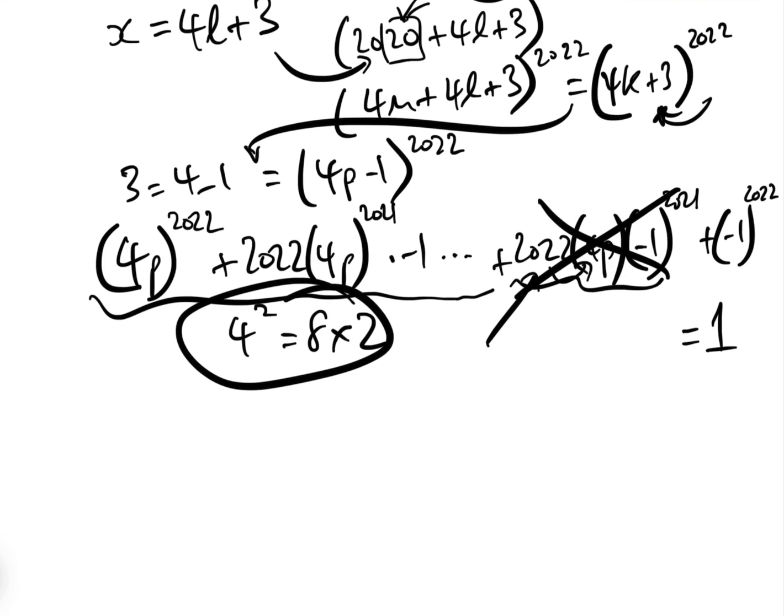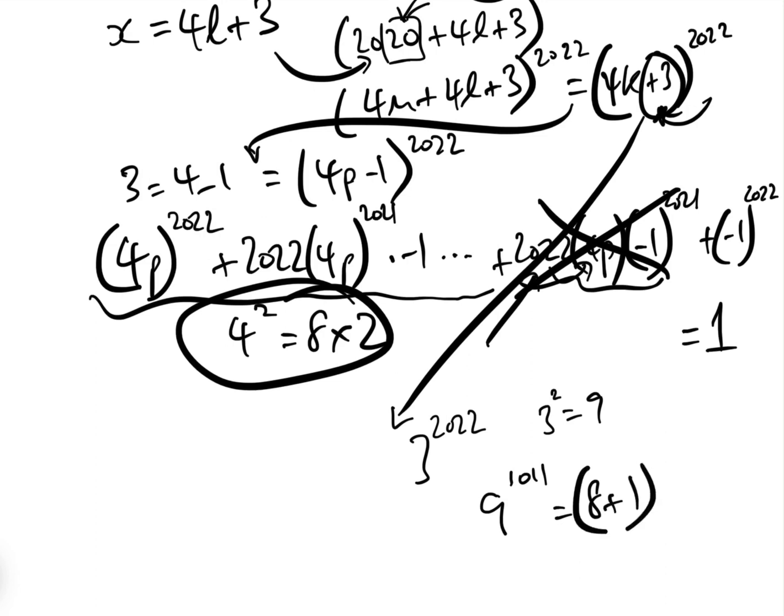And again, just in case you had not seen that we move 3 to be 4 - 1, and we're left with 3^2022, how do we work out what the remainder is when that is divided by 8? Well, 3^2 is equal to 9. So basically, we could rewrite that as 9^1011, which is (8 + 1)^1011. And then when we expand all of this out, everything will be a multiple of 8, except for the last term, which will be 1^1011, which clearly equals 1. So giving the remainder again of 1.